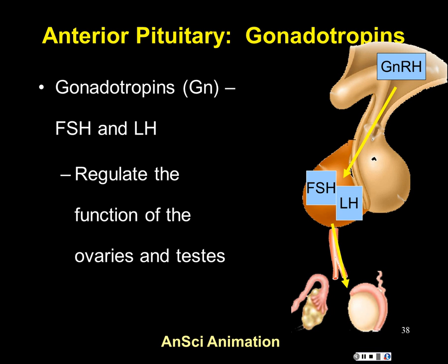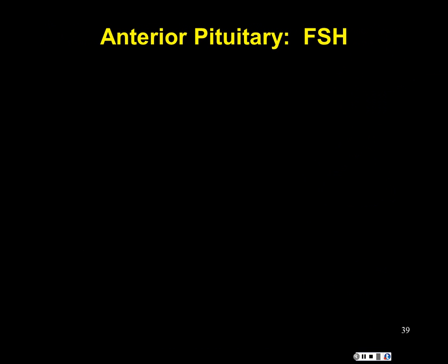Follicle-stimulating hormone, as the name implies, stimulates follicles — specifically the follicles of the ovary. The follicle is a fluid-filled structure, like a blister, that grows around an egg. FSH stimulates those follicles in the female, promoting growth of the egg and recruitment of oocytes for ovulation. A woman has a finite number of eggs; each month some get recruited and grow that large fluid-filled follicle to prepare for ovulation.